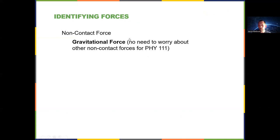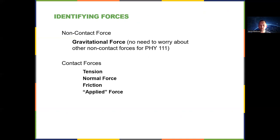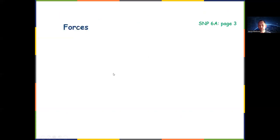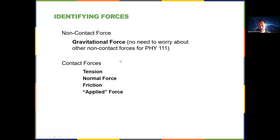There is the non-contact force — the gravitational force — and then contact forces such as tension, normal force, friction, and applied force. When identifying forces acting on a particular object, think: is there a gravitational force? Probably — either Earth is pulling down on it, or another planet or moon is. Then think about what the object is touching and go from there.